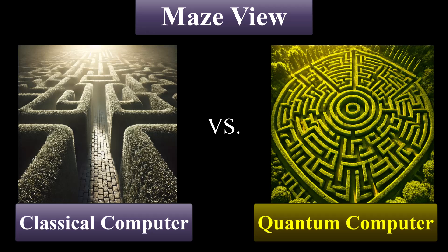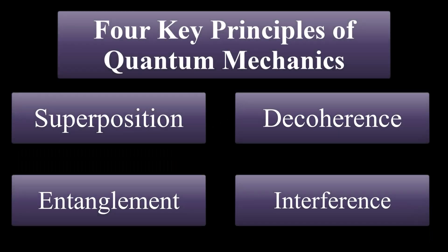Understanding quantum computing requires understanding of four key principles of quantum mechanics, which are superposition, entanglement, decoherence, and interference.